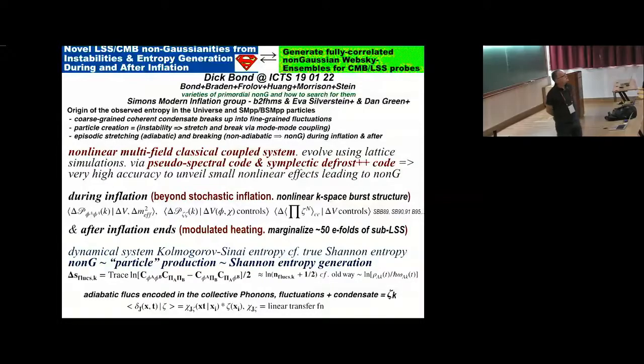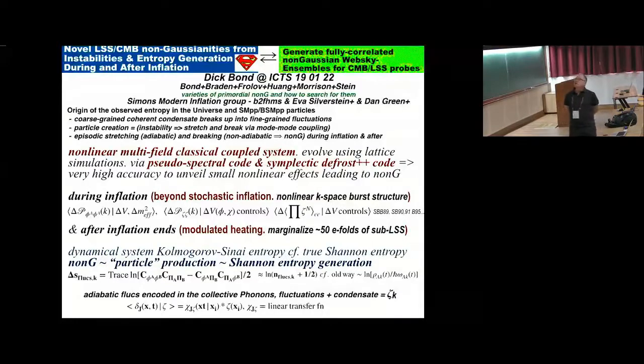The goal is seeing other measures of non-Gaussianity from the ultra-early universe, novel large-scale structures, CMB non-Gaussianities, and invariably these are associated with instabilities and entropy generation during and after inflation. So the symbol there is S for entropy. It also looks like zeta, which is the measure of adiabatic fluctuations. I'm going to cross-talk with the generating fully correlated non-Gaussian, what we call WebSky map ensembles.